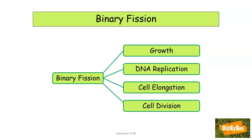Looking at binary fission in more detail, we can see that it is made up of four stages. The first stage of the life cycle involves growth, followed by DNA replication or copying of the chromosomal DNA, followed by cell elongation, and lastly finishing with cell division.